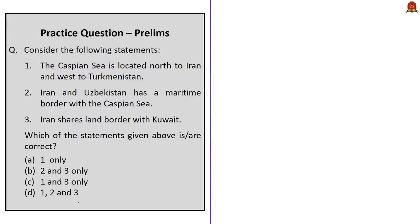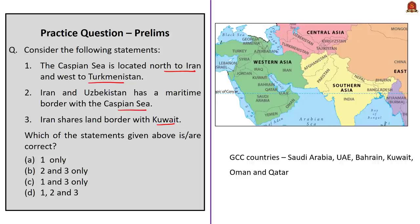Consider the following statements: Statement 1: The Caspian Sea is located north of Iran and west of Turkmenistan. Statement 2: Iran and Uzbekistan have a maritime boundary with the Caspian Sea. Statement 3: Iran shares a land border with Kuwait. Looking at the map, the Caspian Sea shares borders with 5 nations: Russia, Kazakhstan, Turkmenistan, Iran, and Azerbaijan. Uzbekistan is a landlocked country and does not share a maritime boundary with the Caspian Sea. Also, Iran does not share a land border with Kuwait — only Iraq and Saudi Arabia do. Therefore, only Statement 1 is correct, and the correct answer is option A.